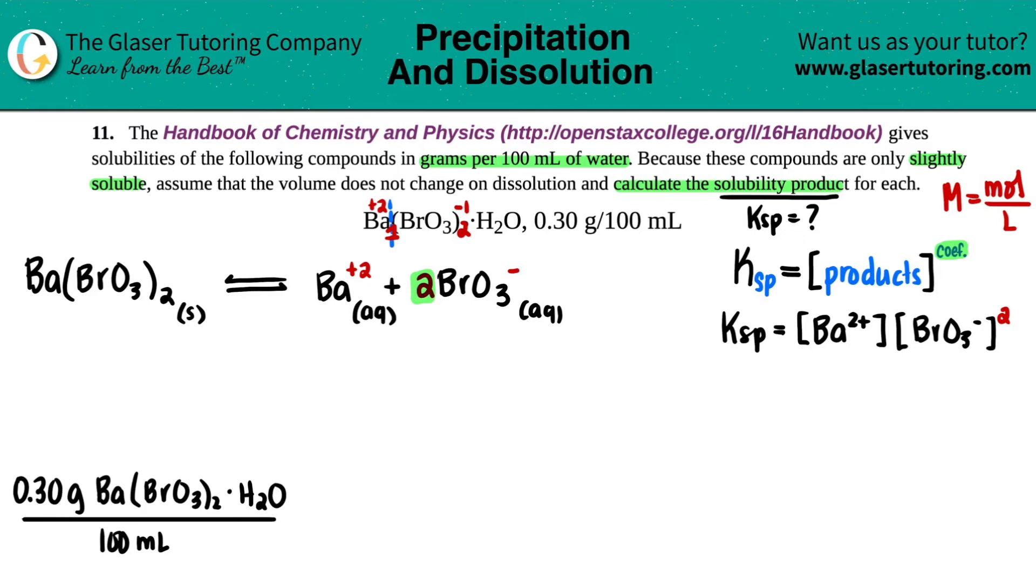So now just work with one unit at a time. Let's first convert the grams into moles. So we're going to times by a ratio. We're going to throw the unit that we don't want on the other side. So grams of the Ba(BrO3)2·H2O goes on the bottom. And then moles of the Ba(BrO3)2·H2O go on the top. One mole always equals whatever the mass is on the periodic table.